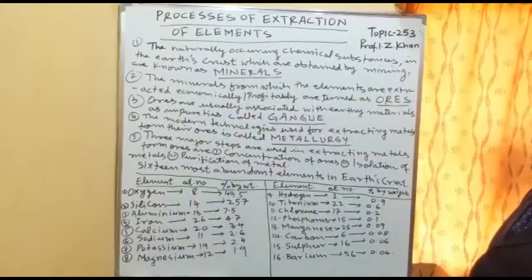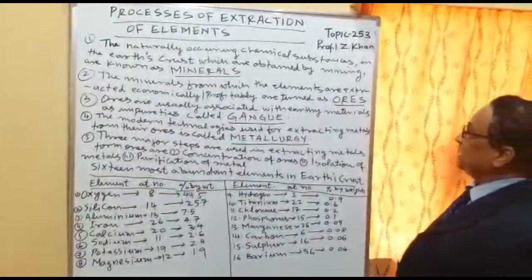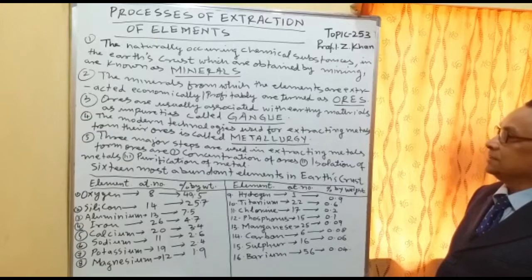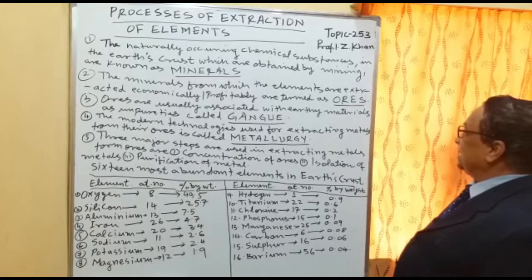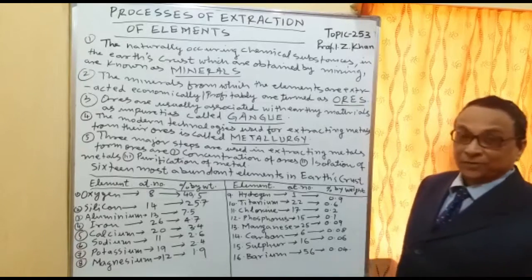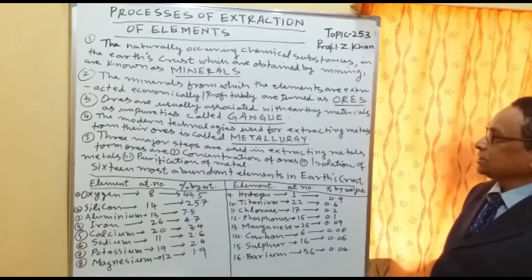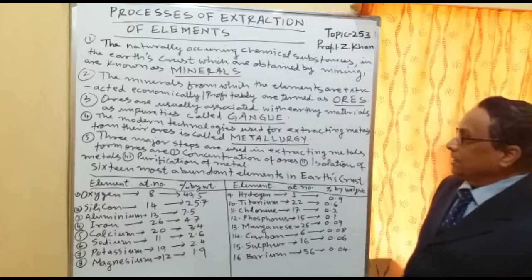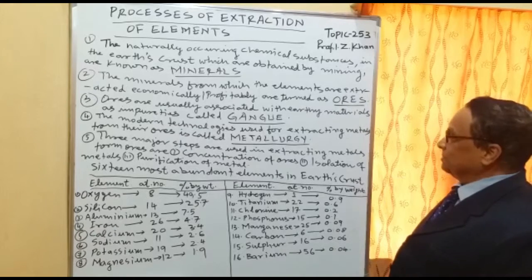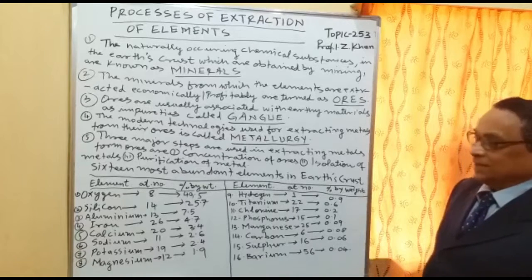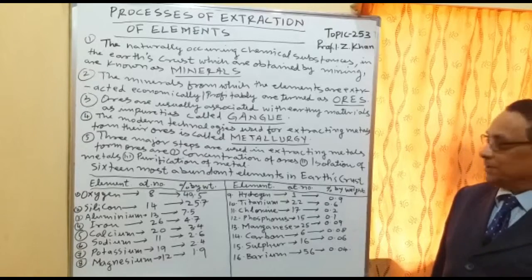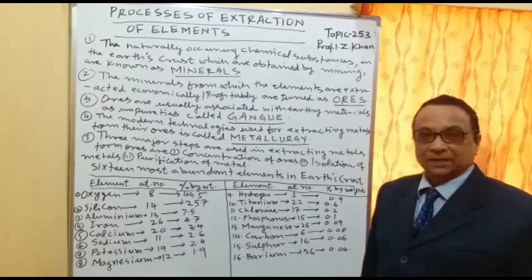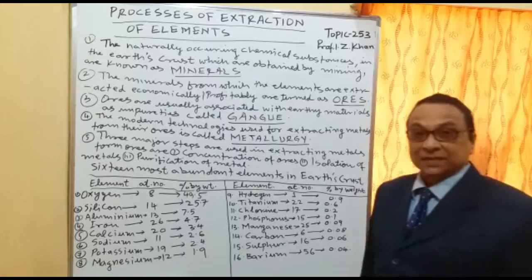The process of extraction of elements: the naturally occurring chemical substances in the earth's crust obtained by mining are known as minerals. The minerals from which elements are extracted economically or profitably are termed as ores. Ores are usually associated with earthy materials as impurities called gang. The modern technology used for extracting metals from their ores is called metallurgy. Three major steps are used for the extraction of metal: one is the concentration of the ores, two is the isolation of the metals, and three is the purification of the metal.